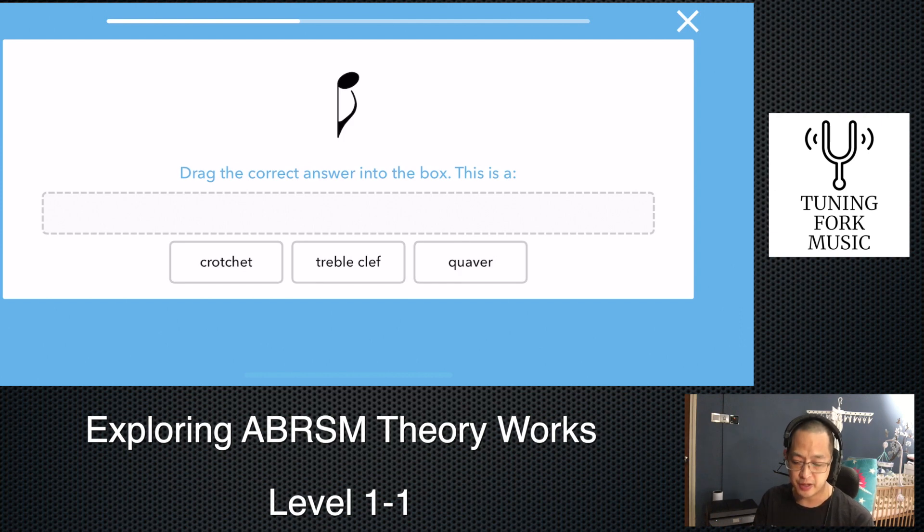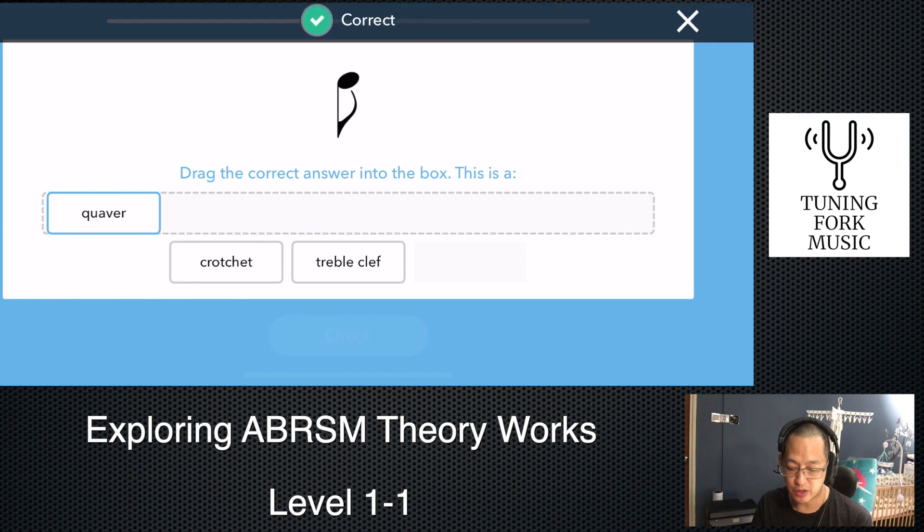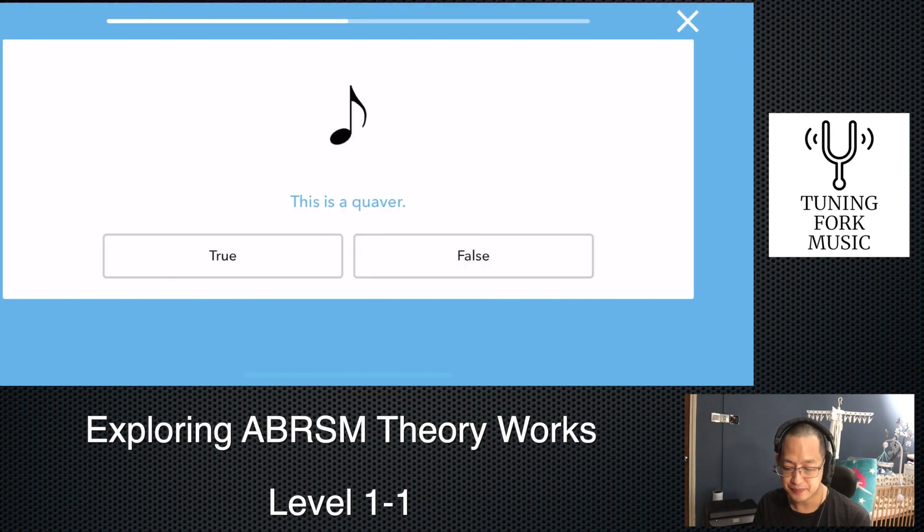It's saying, this is a semi-quaver, true or false. We see the two flags. So, for those that are absolute beginners, when you have a crotchet, which is just one beat, it's just the plain, no flag. The first line indicates dividing in half. That means the quavers or the eighths. And then the semi-quavers. There's two flags. So, we're going to say true.